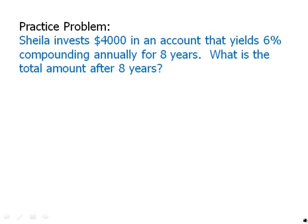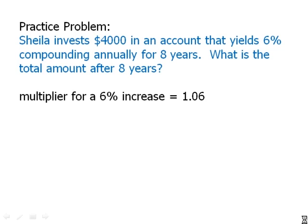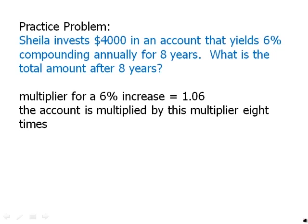Here's how we'll approach this. The multiplier for a 6% increase is 1.06. It's going to get multiplied by that 8 times. So the total amount in the account is going to be $4,000 times that multiplier, 1.06 to the 8th. That is the mathematical expression for the total amount after 8 years.